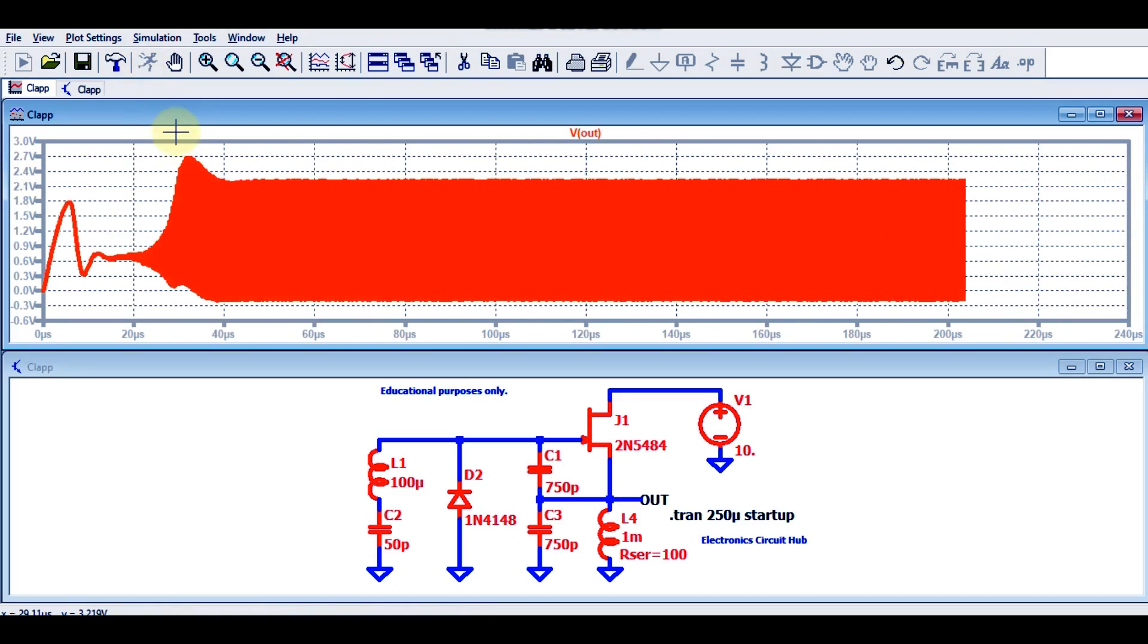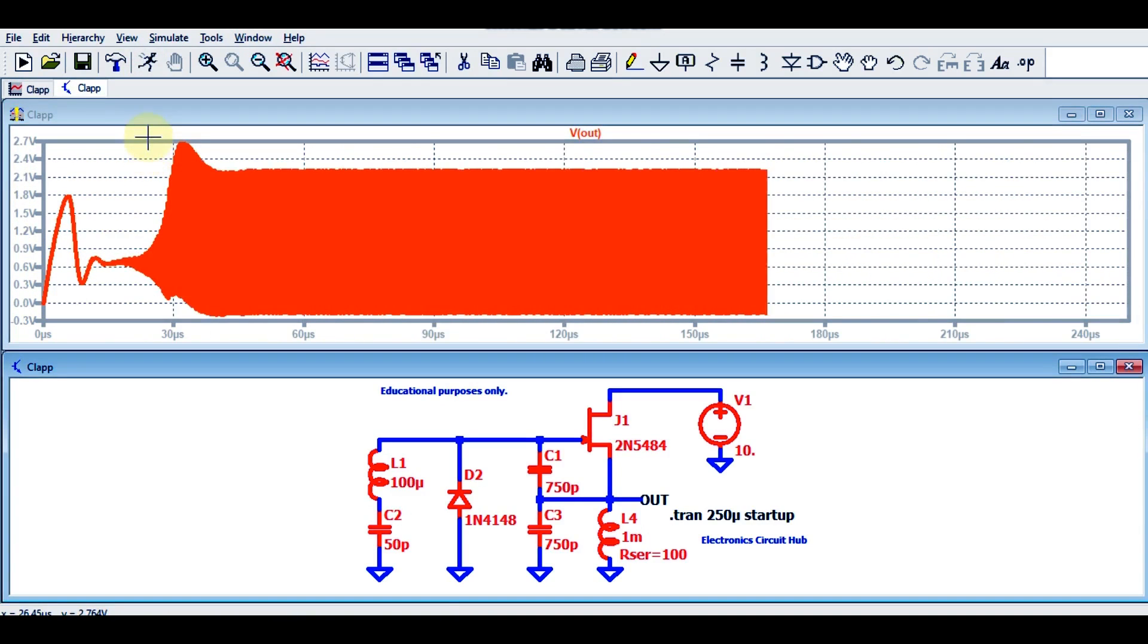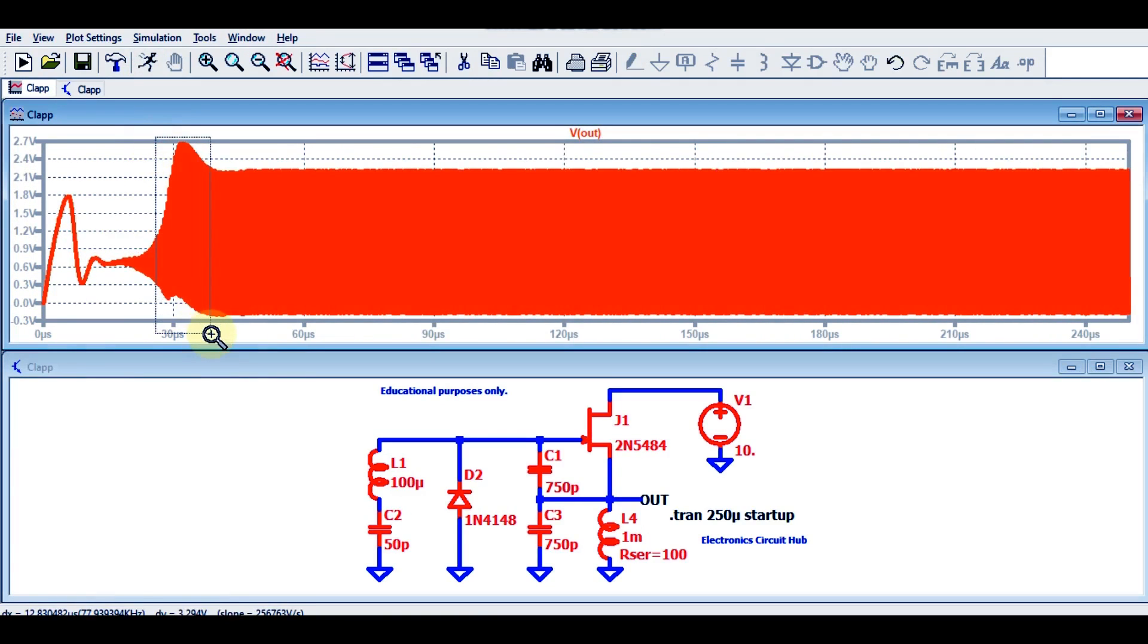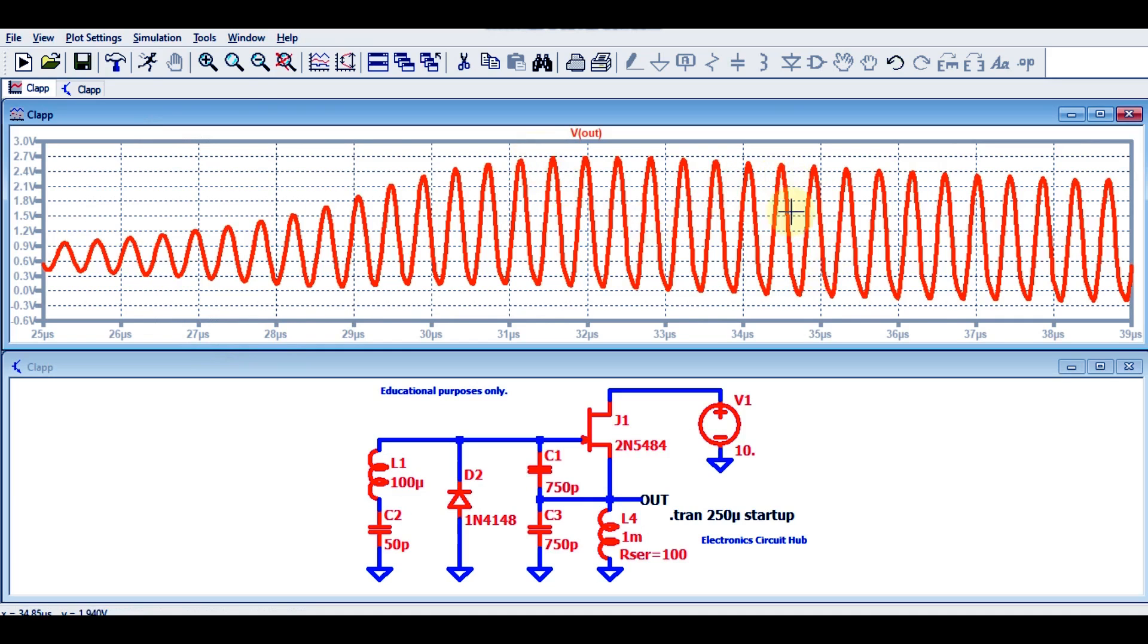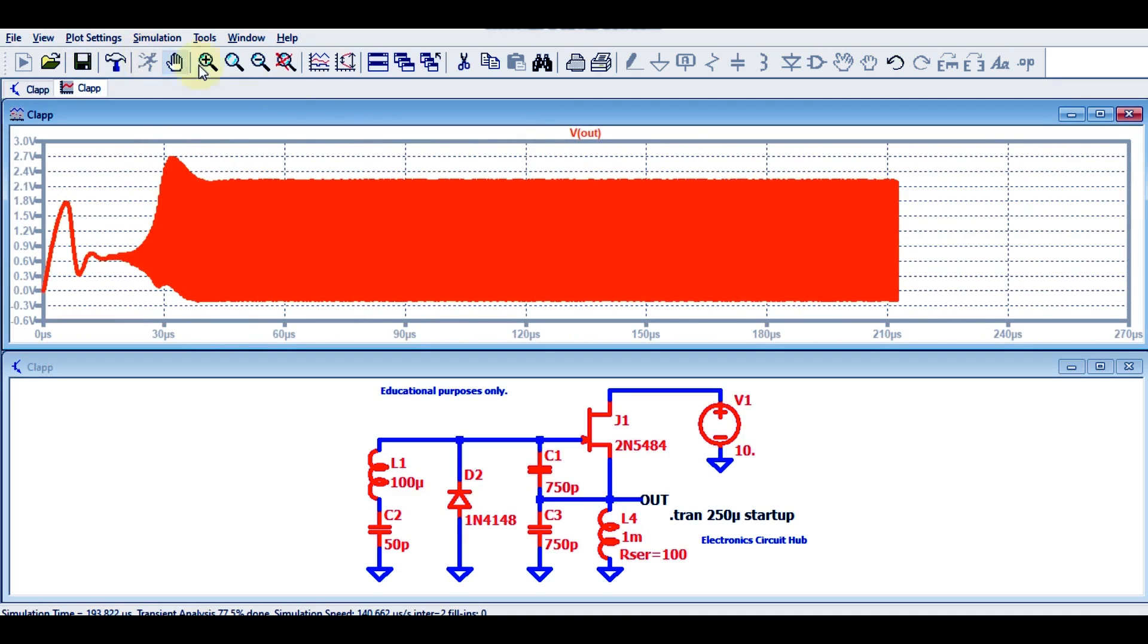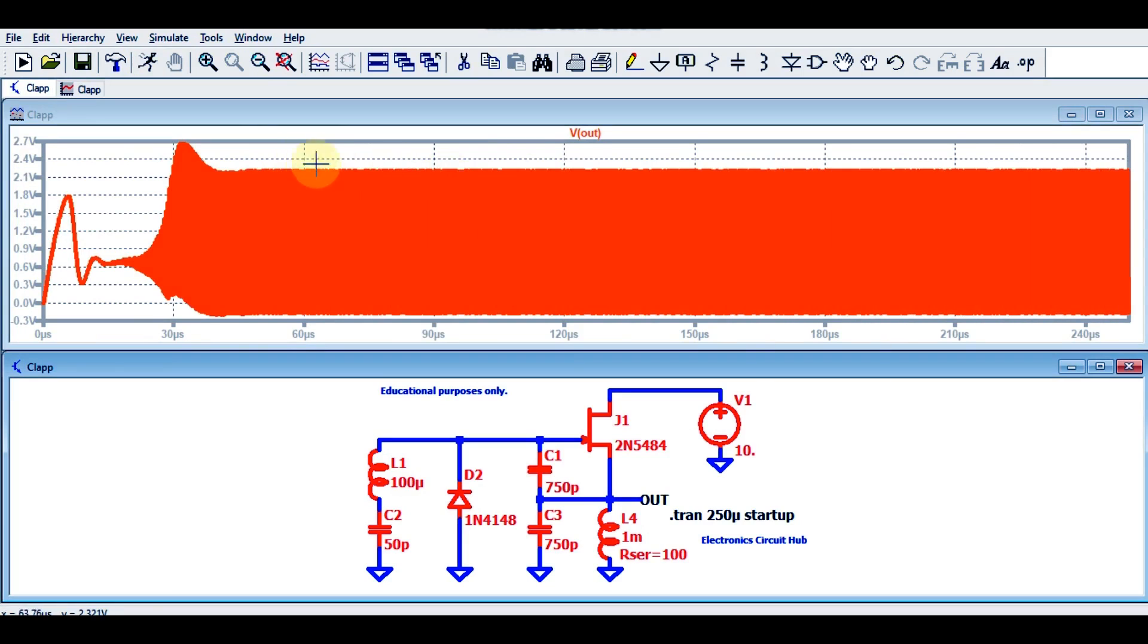You can see the amplitude is around 2.7 volts. This amplitude is higher, and after some point of time you can see the oscillation got stable.